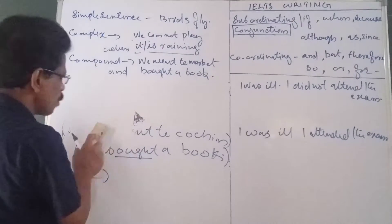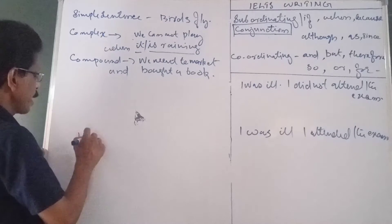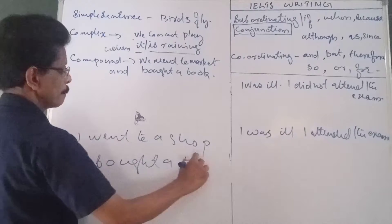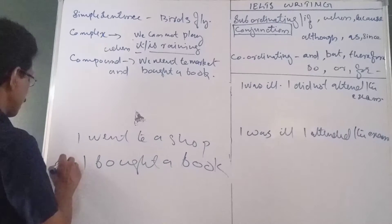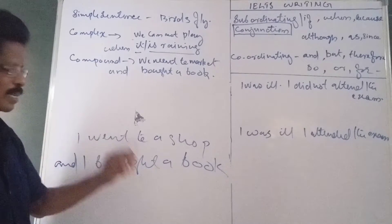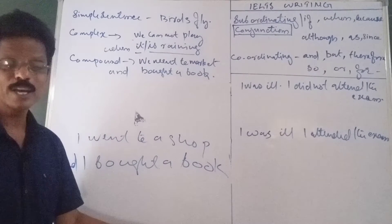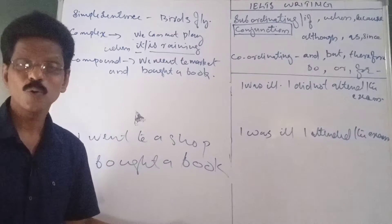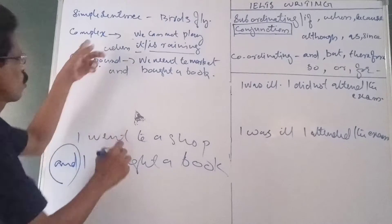Is it clear? When a subordinate clause is connected to a main clause by a subordinating conjunction, it is known as a complex sentence. Take another example: 'I went to a shop' and 'I bought a book' — two simple sentences. Put 'and' here: 'I went to a shop and bought a book.' Here two clauses exist, but one is not subordinated to the other — both are main clauses. If two or more main clauses are connected together by a co-ordinating conjunction, it is known as a compound sentence.